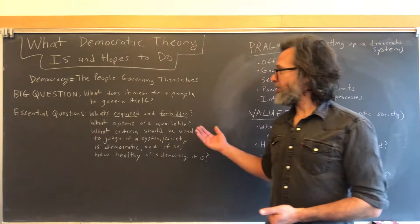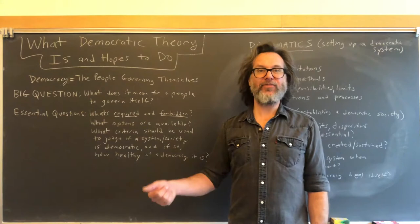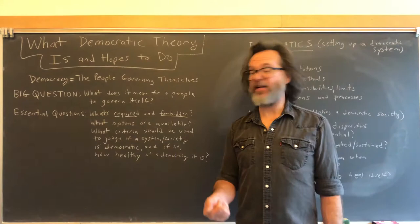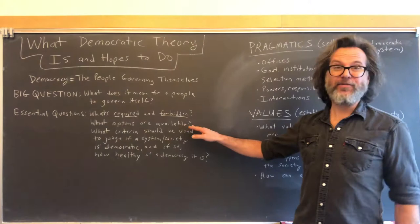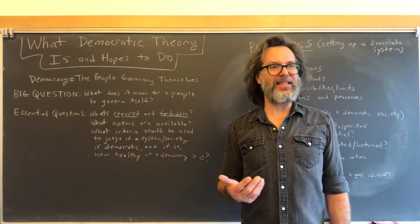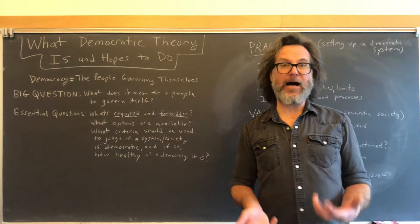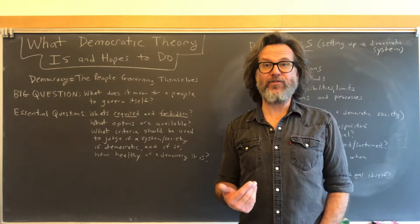What can't be there? What aspects can we not have if we're going to call our system democratic — if we're going to say the people are governing themselves? That is a big question and a lot of what we'll do for two-thirds of this class. What options are available? The thing that's tough about a democratic system is that there's not just one way of the people ruling themselves — there are lots of different options.